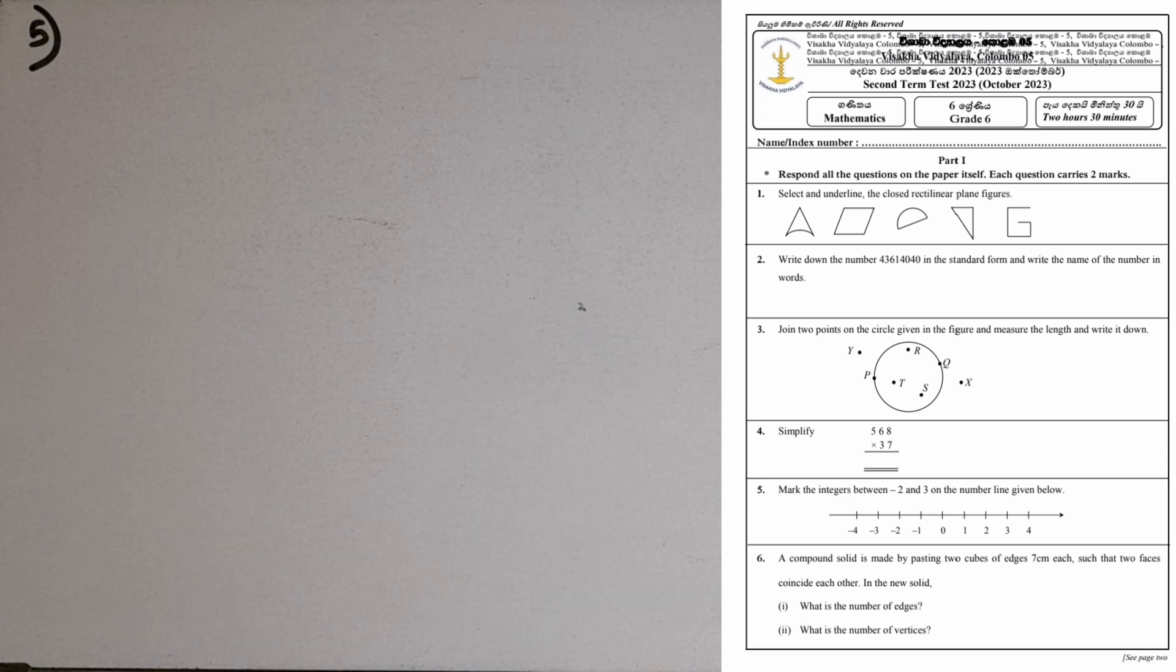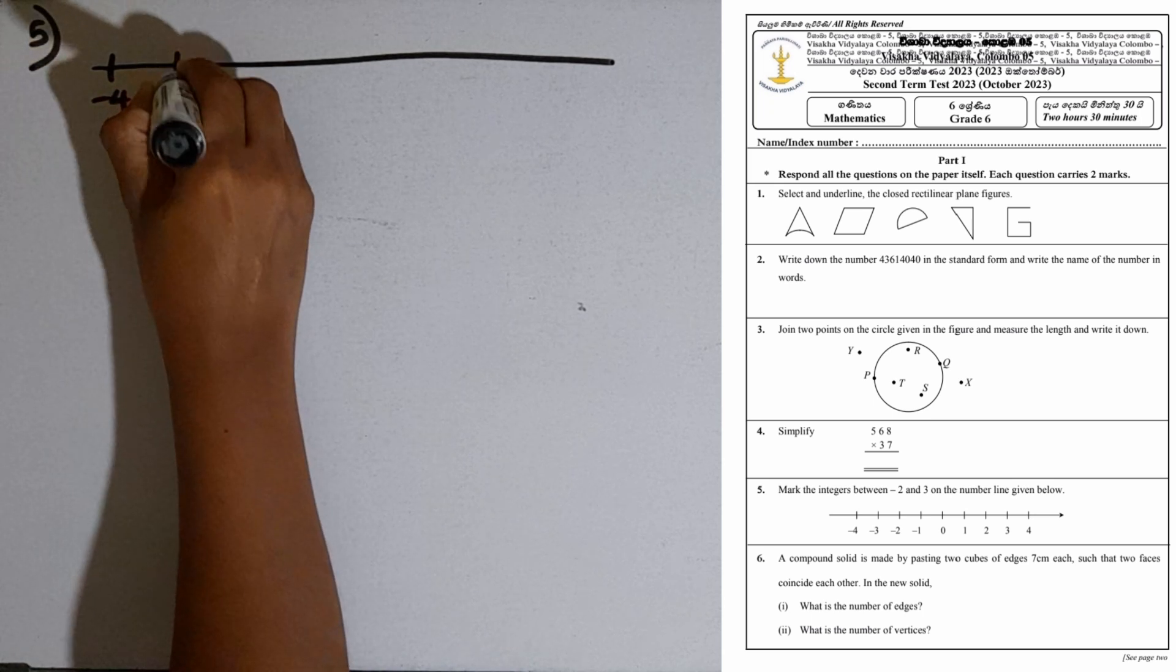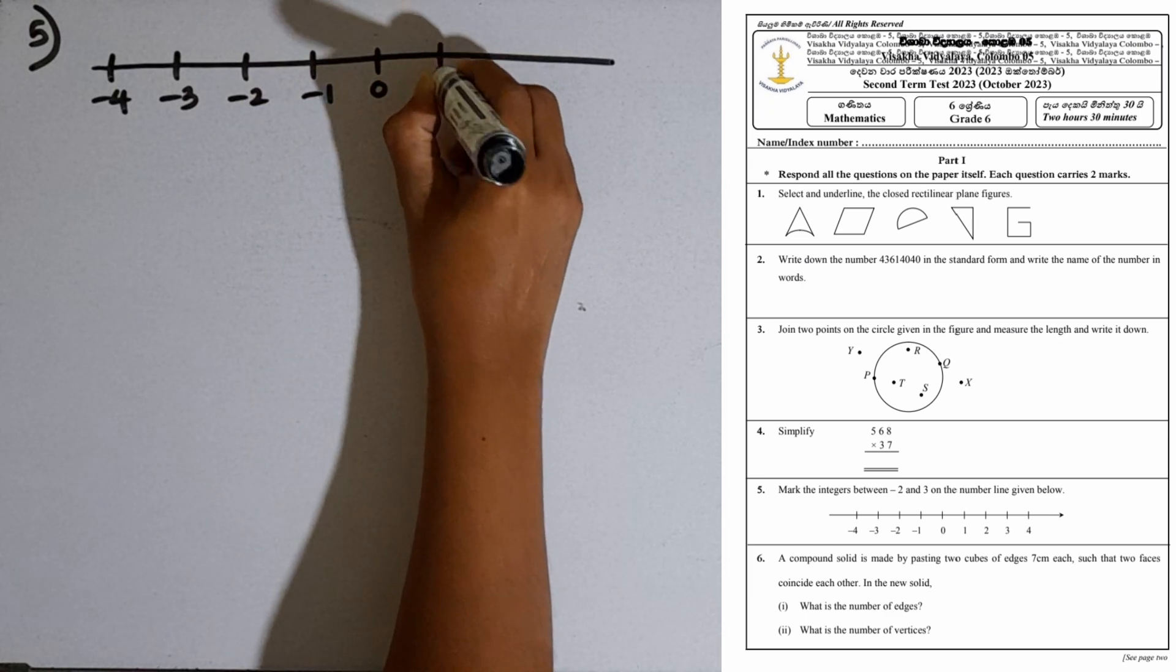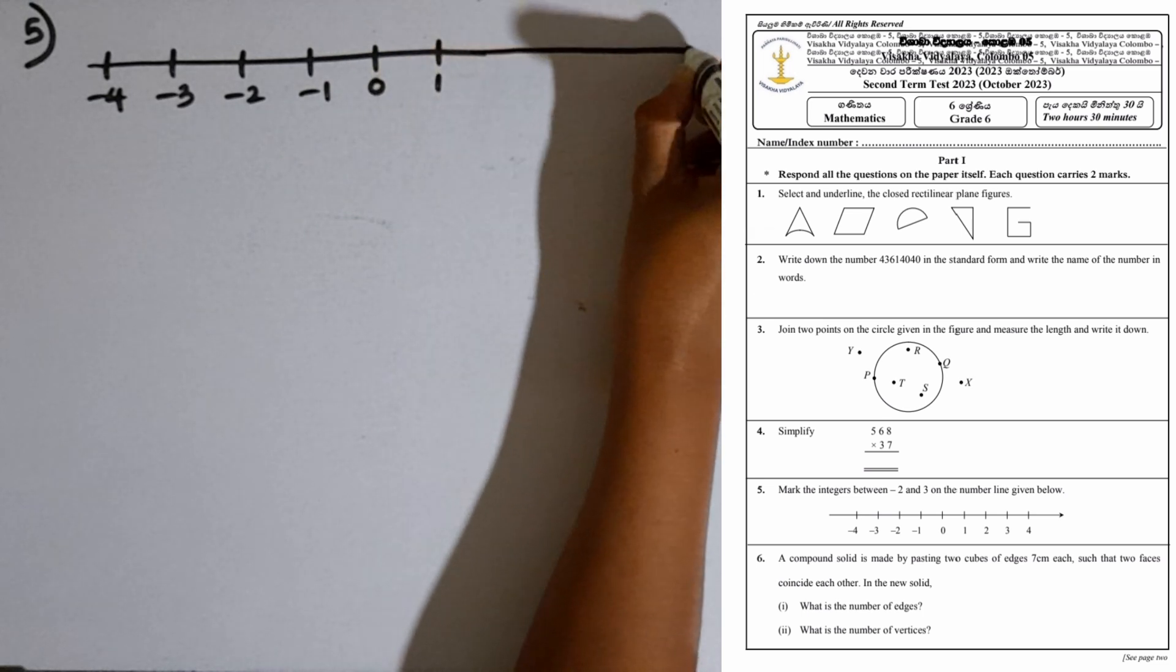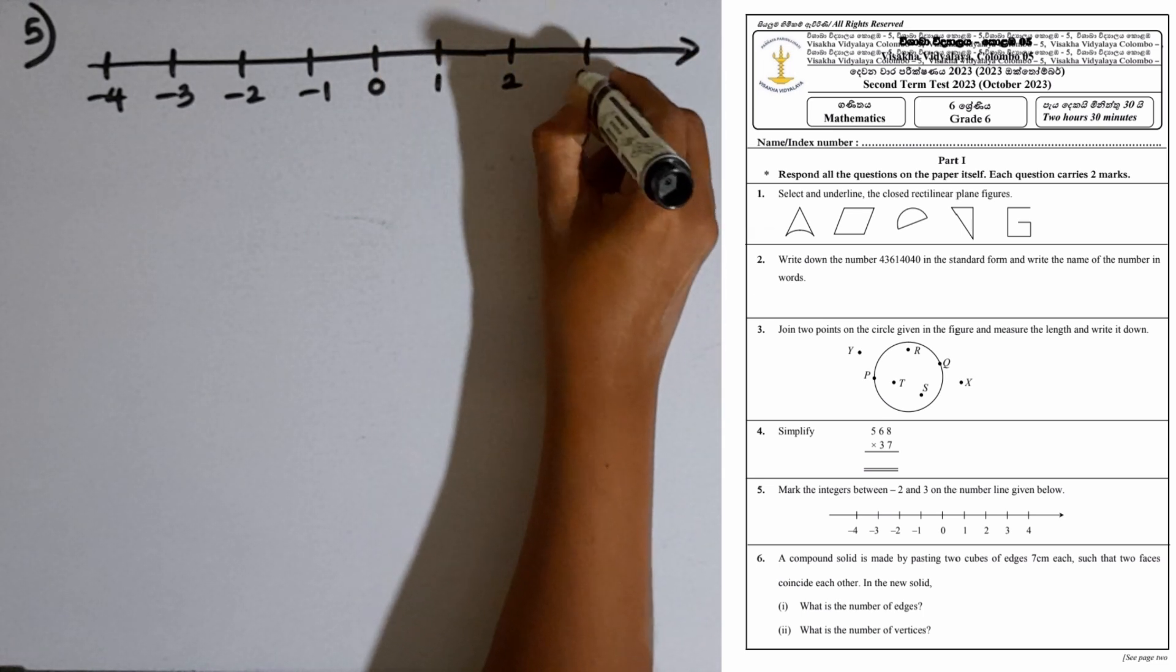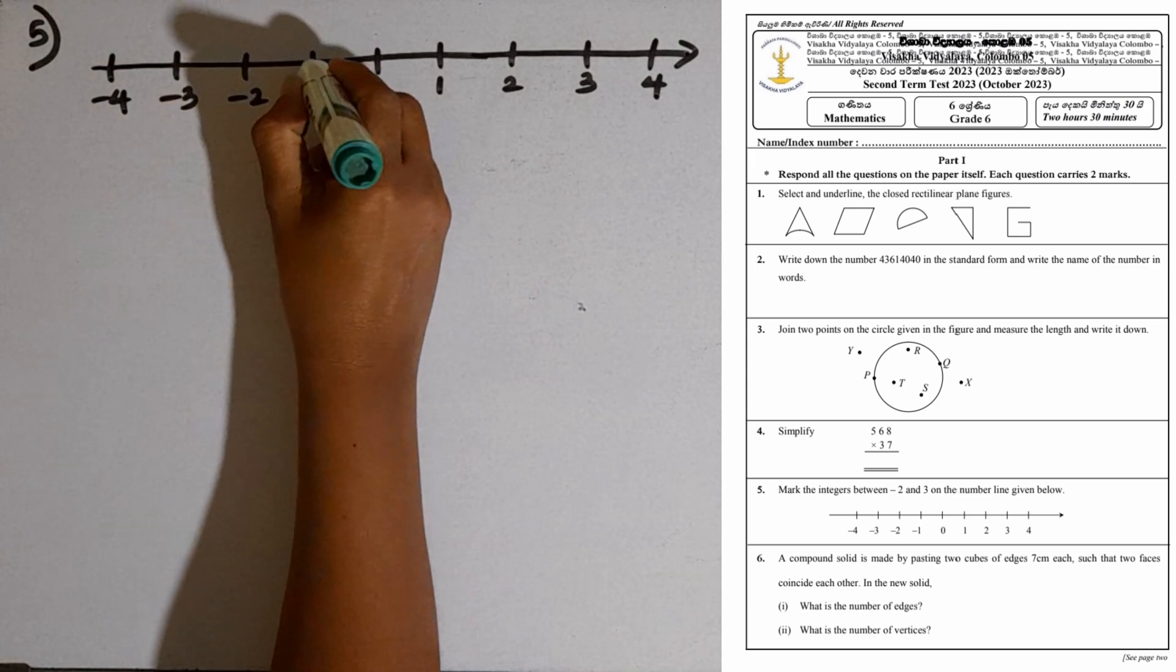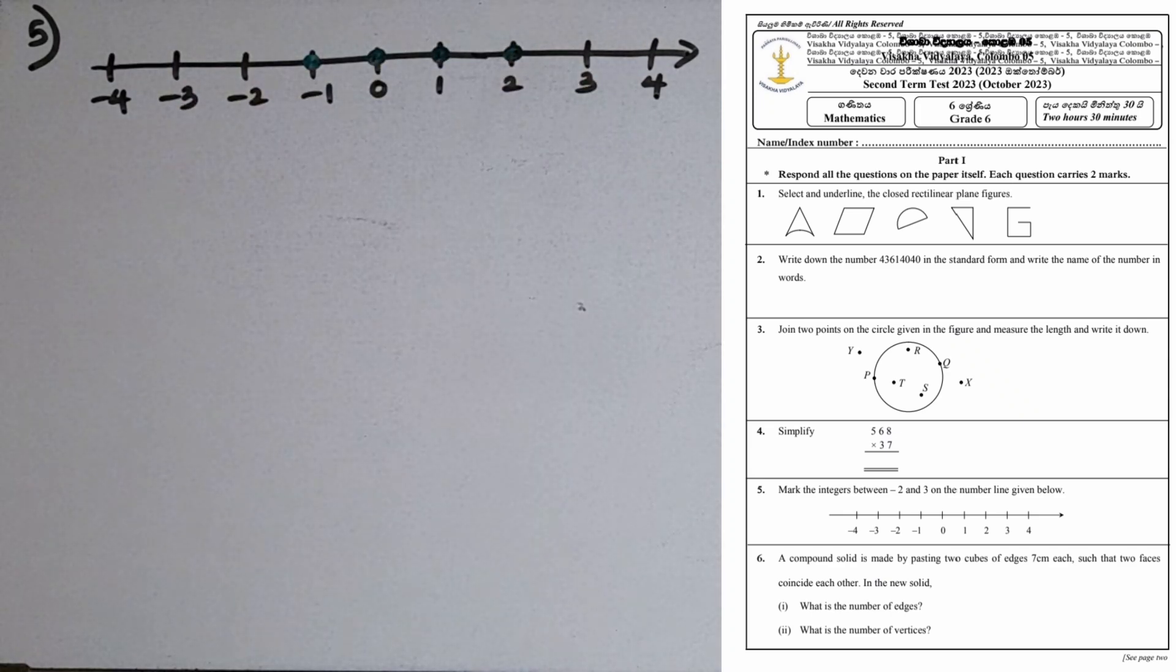Question number five: Mark the integers between minus 2 and plus 3 on the number line given below. This is the number line: minus 4, minus 3, minus 2, minus 1, 0, 1, 2, 3, 4. What are the integers between minus 2 and plus 3? Minus 1, 0, 1, 2. Only these four integers.